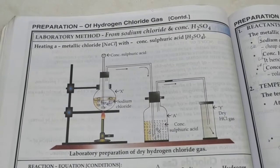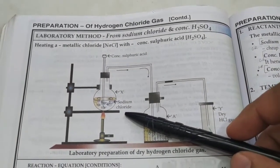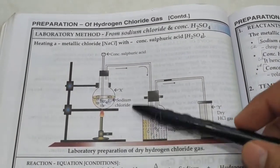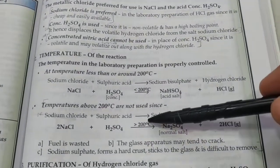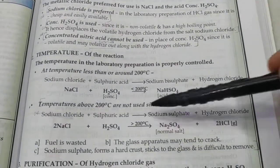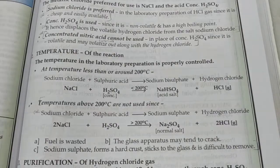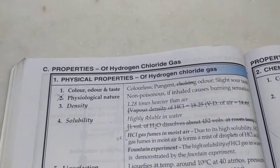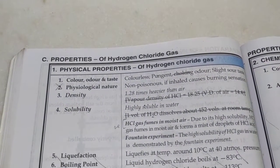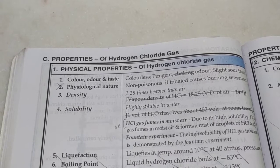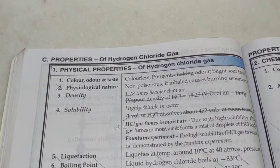The metallic solid preferred is sodium chloride because it is abundantly available. The reaction at temperatures greater than 200°C is avoided. Moving on to physical properties of hydrogen chloride gas: it is colorless and pungent, and slightly sour to taste because it is an acid.